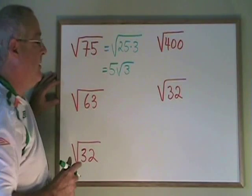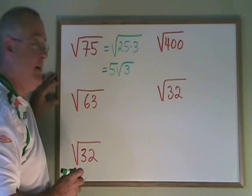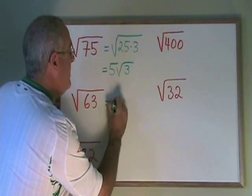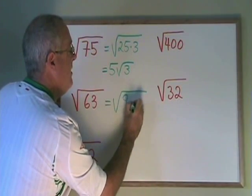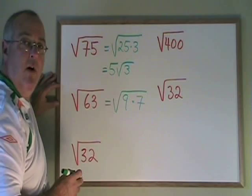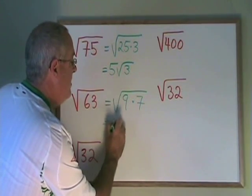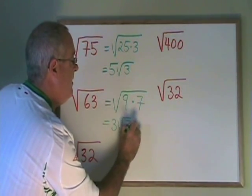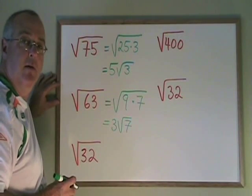The largest factor of 63 that is a square is 9. So I can rewrite it as the square root of 9 times 7. Since the square root of 9 is 3, this becomes 3 root 7, with the 7 trapped inside the radical.